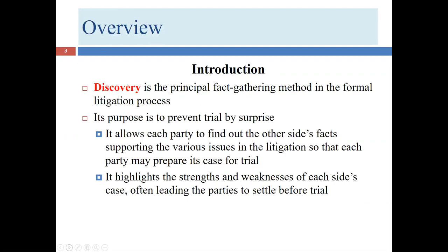Discovery is the formal process, but there's also an informal process we've discussed in previous chapters, where people gather information independently. For example, I can interview my own client, talk to witnesses who want to talk to me, and request documents from people willing to assist. I'll have done that for my client well before the formal discovery process starts — it's required, in fact, because Rule 11 requires attorneys who sign pleadings to have done an independent investigation. Chapter 10 is about the formal process, not the informal one.